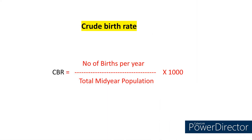Crude birth rate. Whenever you see the word crude, always remember in the denominator we need to take the total mid-year population. So the formula becomes: CBR is equal to number of births per year in the numerator and total mid-year population in the denominator, multiplied by 1000.